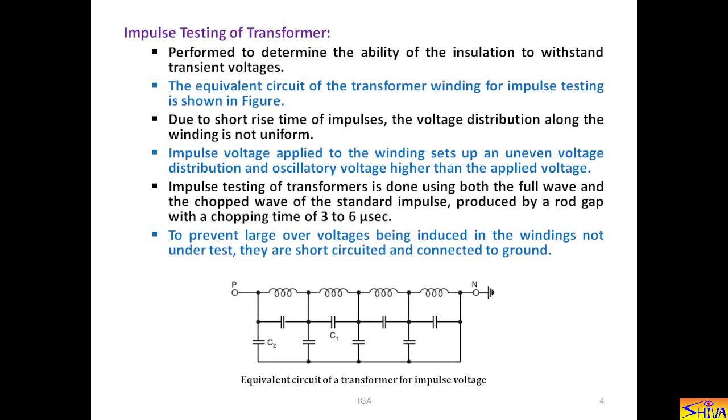Now, let us see how impulse testing of the transformer is done. This is the electrical equivalent circuit of the transformer for impulse voltage testing. It is distributed RLC parameter because impulse voltage is a transient voltage. So, it is performed to determine the ability of the insulation to withstand transient voltages.